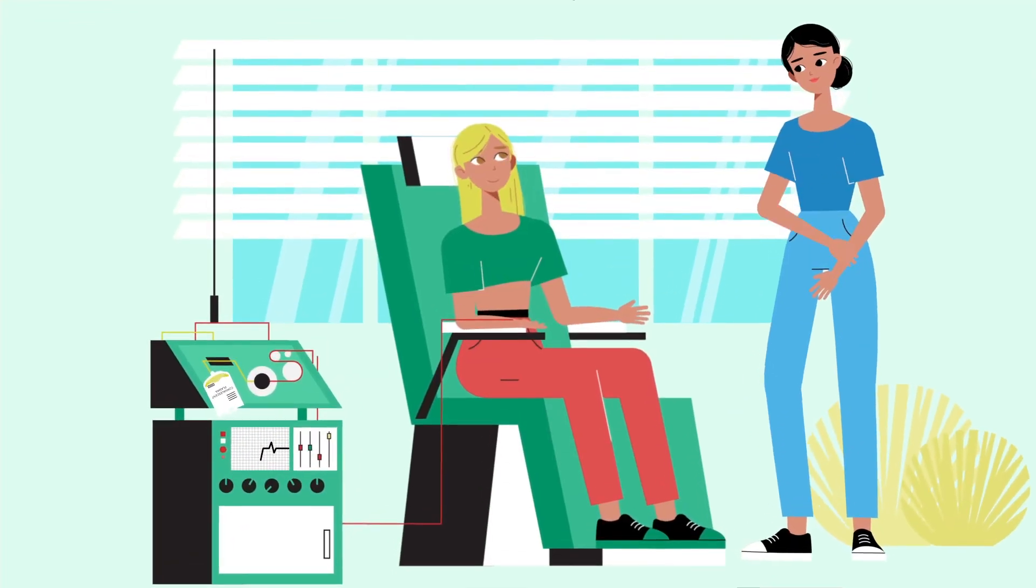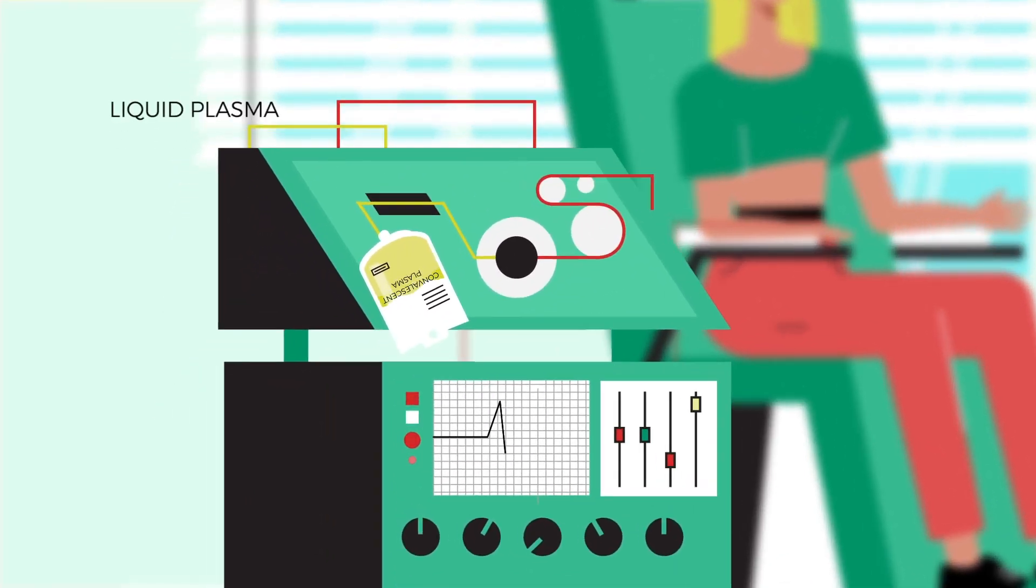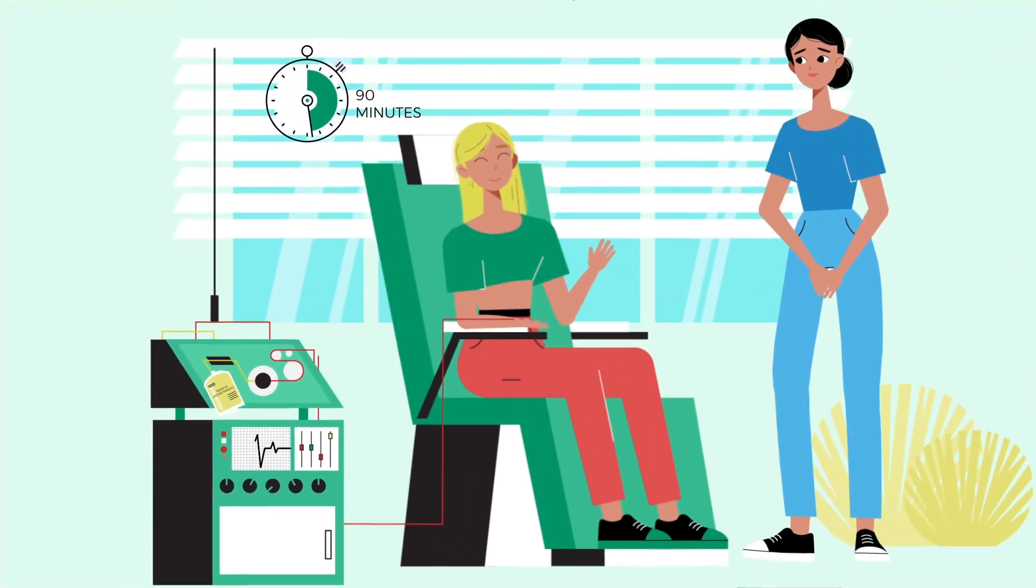At the blood center, you'll spend 30 to 40 minutes donating blood through a machine that collects the liquid plasma portion and then returns the red blood cells and platelets back to you. The whole process takes about 90 minutes.